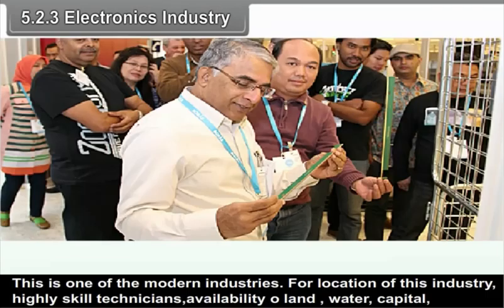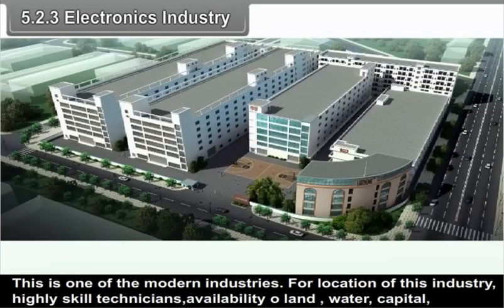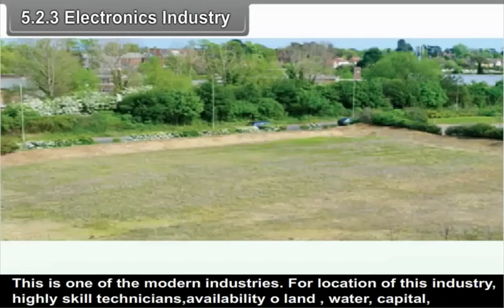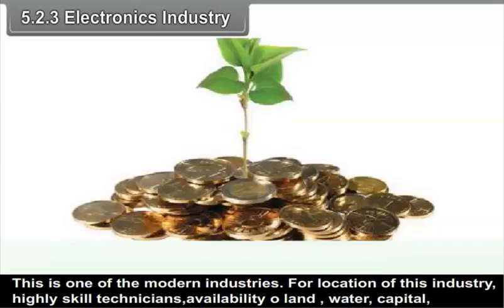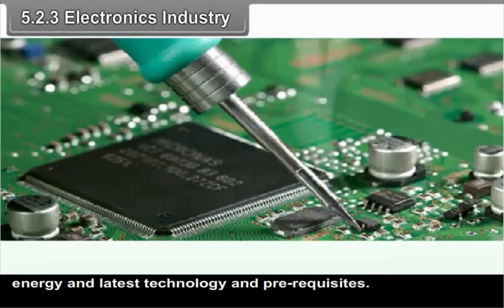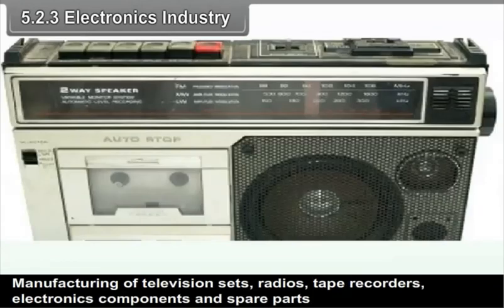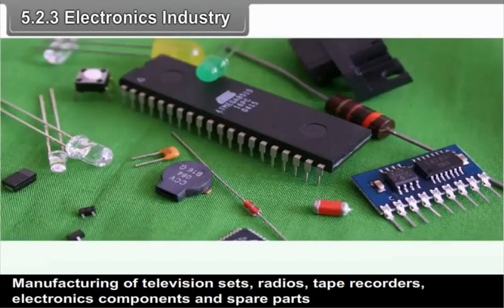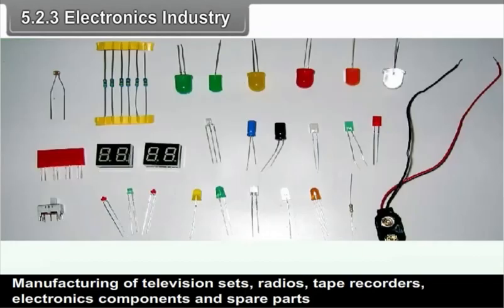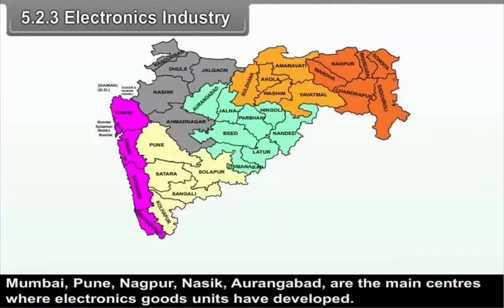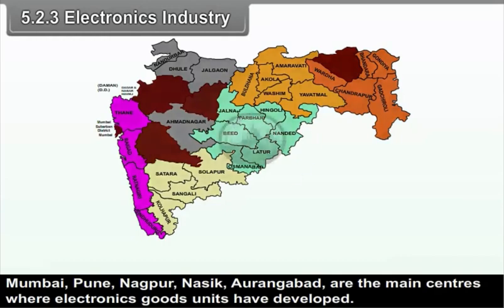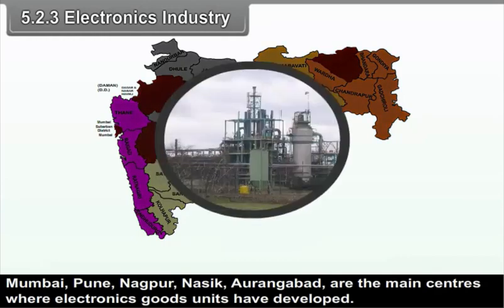Electronics Industry: This is one of the modern industries. For location of this industry, highly skilled technicians, availability of land, water, capital, energy and latest technology are the prerequisites. Manufacturing of television sets, radios, tape recorders, electronic components and spare parts come under electronic industry. Mumbai, Pune, Nagpur, Nasik and Aurangabad are the main centres where electronics goods units have developed.